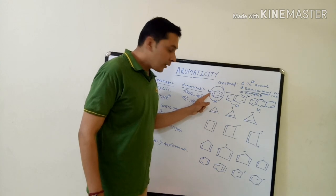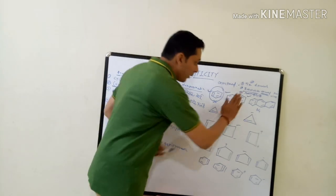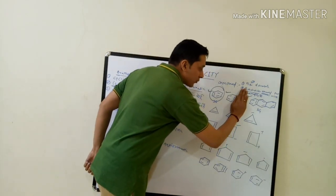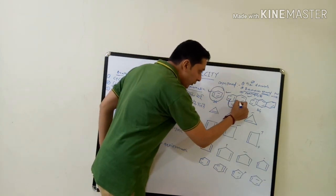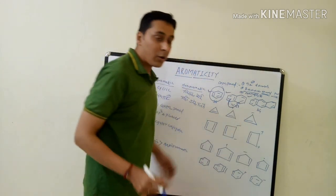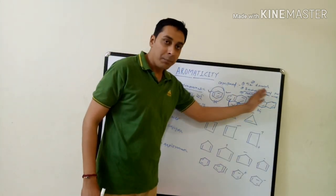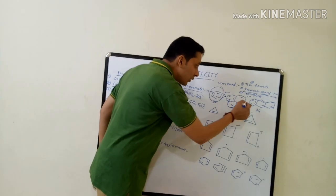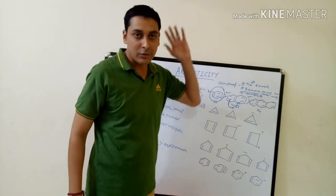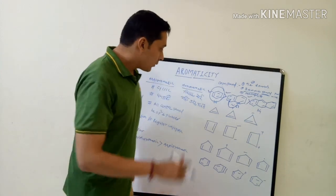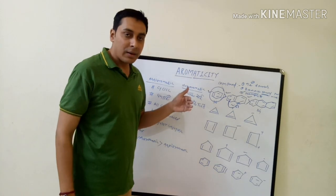Benzene is aromatic. When you move towards naphthalene, it is also aromatic like benzene, but if the first ring is aromatic and you go to the second one, the aromaticity decreases. So the stability order is: benzene is more stable than naphthalene, which is more stable than anthracene, and so on.